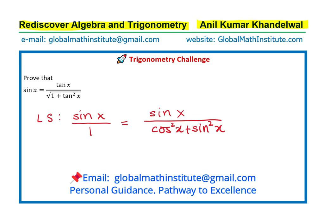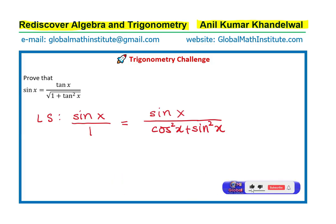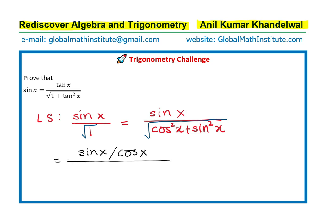We want tan x in the numerator and a square root term in the denominator. So, why not take the square root of 1 in the denominator? That is also 1. You see how we develop a strategy to prove identities. Now, we can divide by cos x. Sin x divided by cos x gives us tan x, and when it gets into the square root, it becomes cos square x. So, let me rewrite this as sin x over the square root of cos square x plus sin square x, and dividing by cos x means within the square root, it will be cos square x.